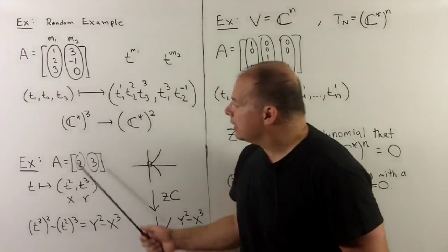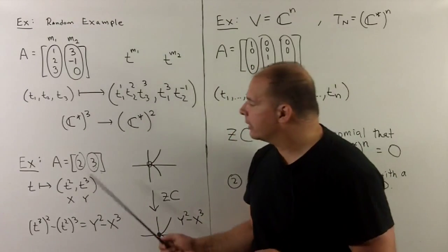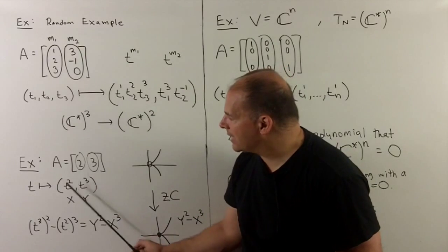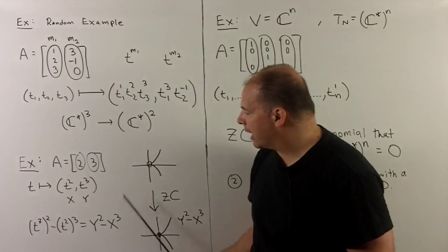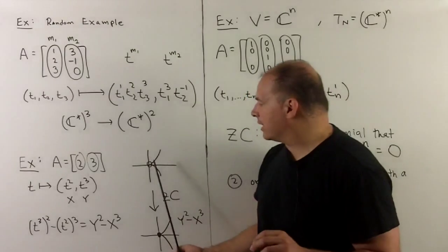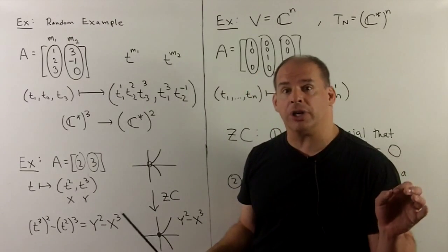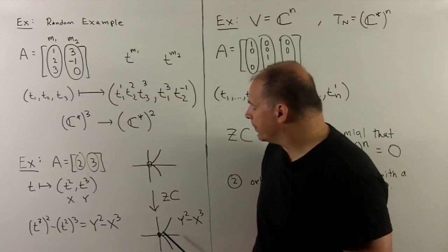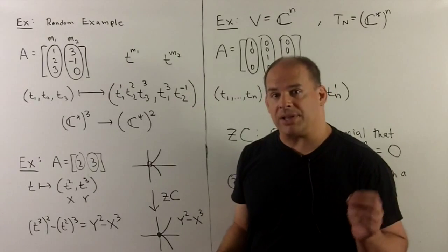Example 2: take the A matrix (2,3). Here we have one variable and two characters, so the map sends T to (T², T³). Calling these x and y, the relation between the coordinates is y² − x³. That gives us this cubic in the plane — it has a singularity. Since we have a map between characters, we're missing the origin, and when we take the Zariski closure, all we do is add back in the origin. This affine toric variety is defined by the ideal (y² − x³).